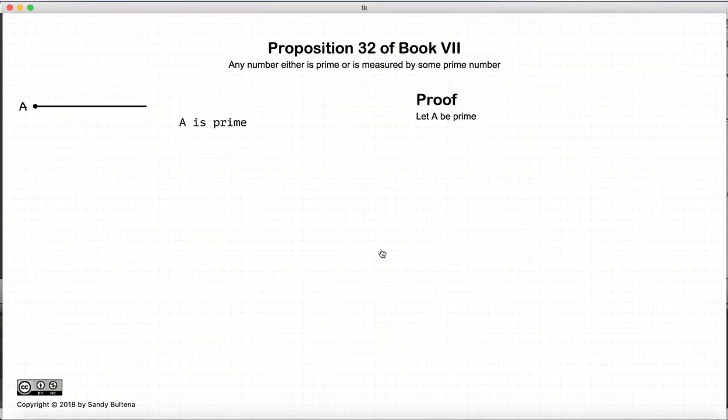The proof of this: if a is prime, well, then we've shown that a is prime. That's pretty straightforward.